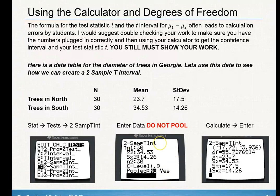With confidence intervals for means, you're never going to pool — you are only pooling with proportions significance tests. Never for any confidence intervals will you pool. Notice right here it's going to give you your confidence interval for the average difference in diameters of trees. It gives you a crazy degrees of freedom — this is the more accurate degrees of freedom based on a complicated calculation. State 'from calculator' so we know where you got it from.